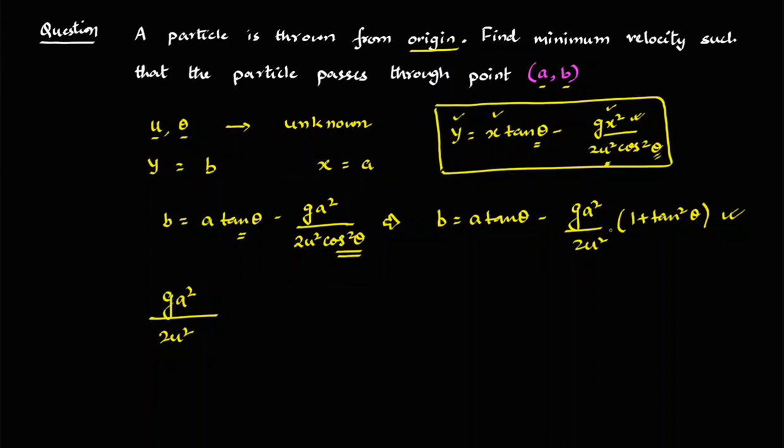So here X and Y are known. So I will actually write the quadratic equation. So it will be tan square theta. I'm just rearranging everything. G A square by 2U square tan square theta minus A tan theta. So A tan of theta and plus B and plus G A square by 2U square. So this is equal to zero.